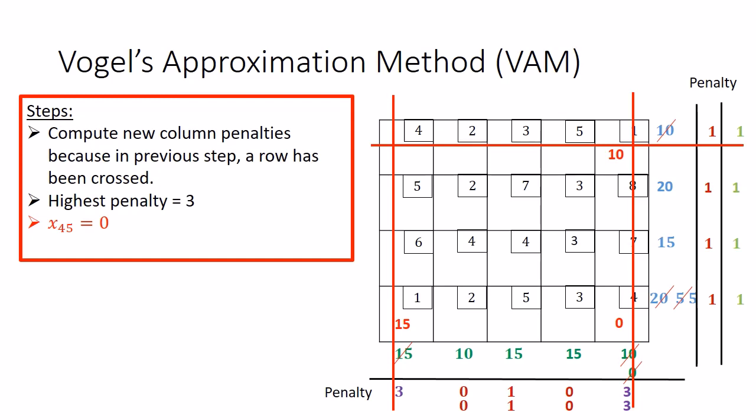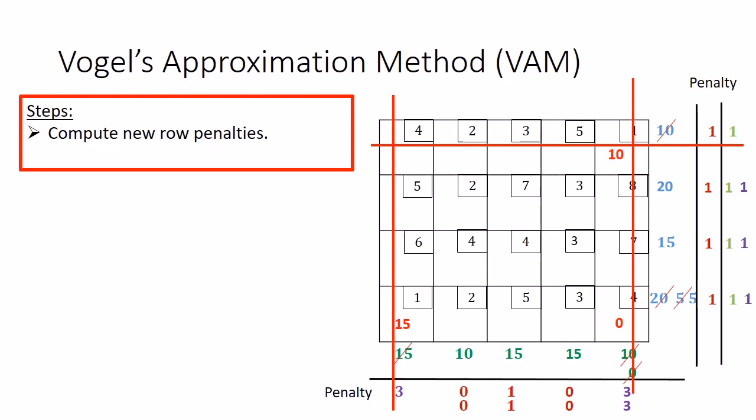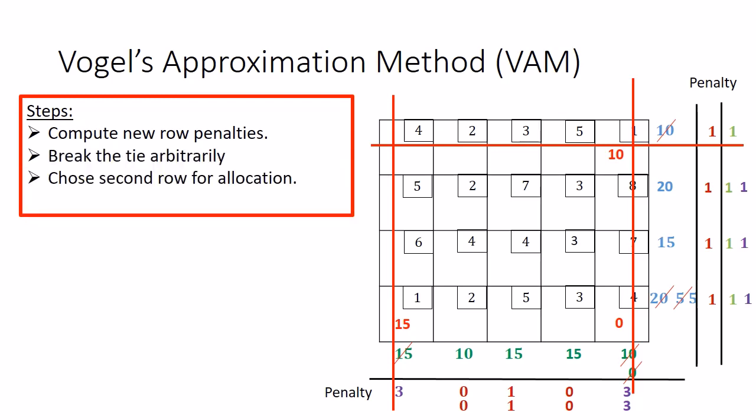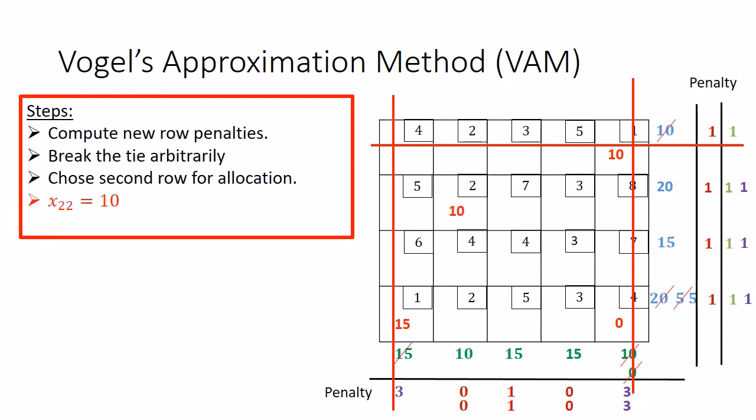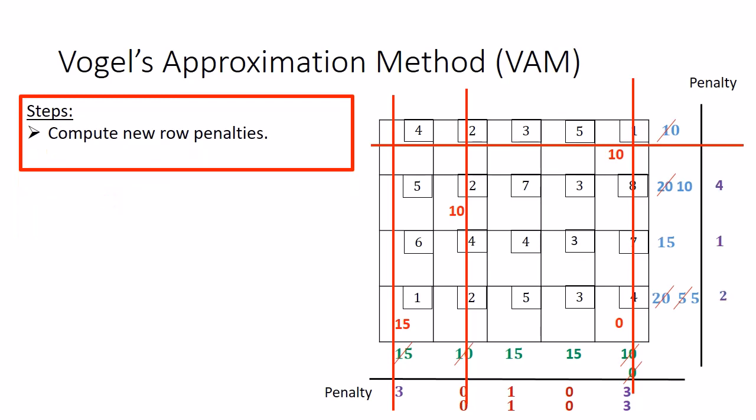Repeat the process: since a column was crossed out, compute new row penalties, which turn out to be 1, 1, and 1. There is still a tie, so break the tie arbitrarily and choose the second row for allocation. In the second row, the cell with minimum cost is cell (2,2), and we allocate 10 units there. The demand of destination 2 is completely satisfied, so the second column gets crossed out, and the supply of source 2 is updated from 20 to 10 units.